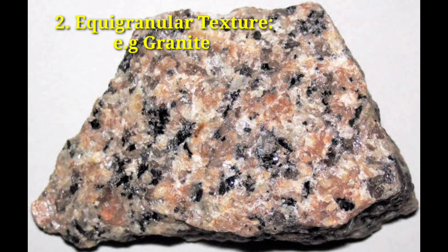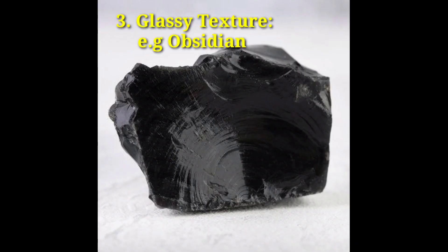3. Glassy texture. Glassy, or hyaline or vitreous, rocks have no or almost no grains at all, as in this quickly chilled pahoehoe basalt or in obsidian.